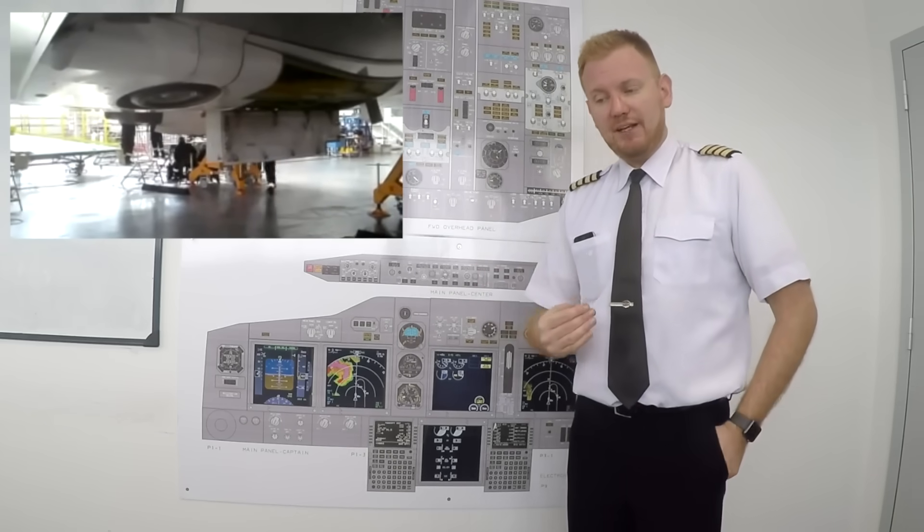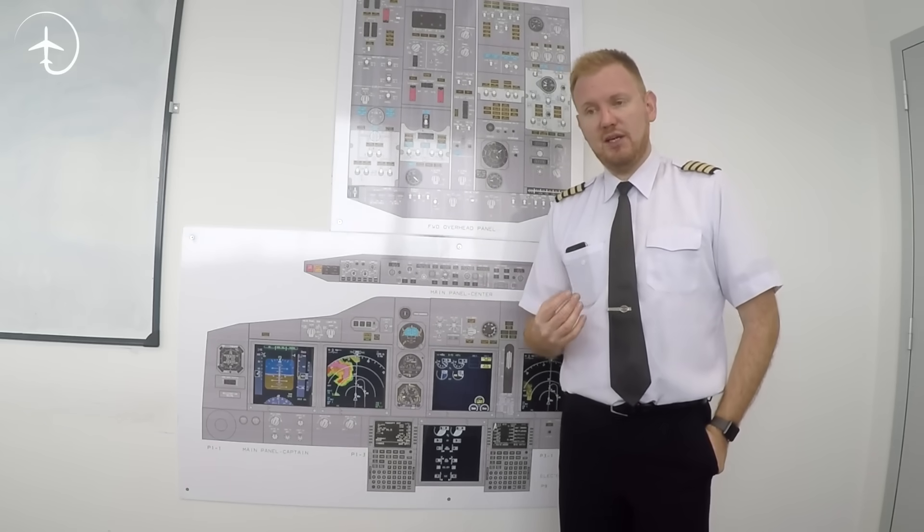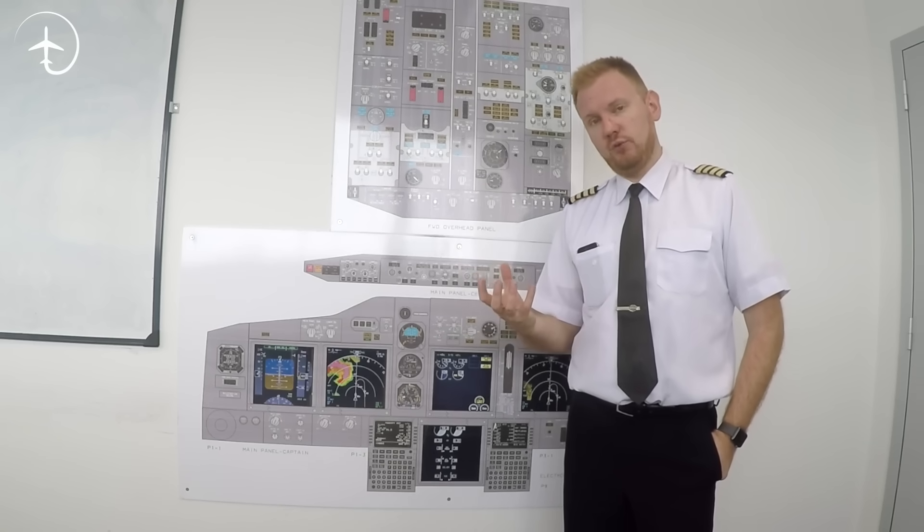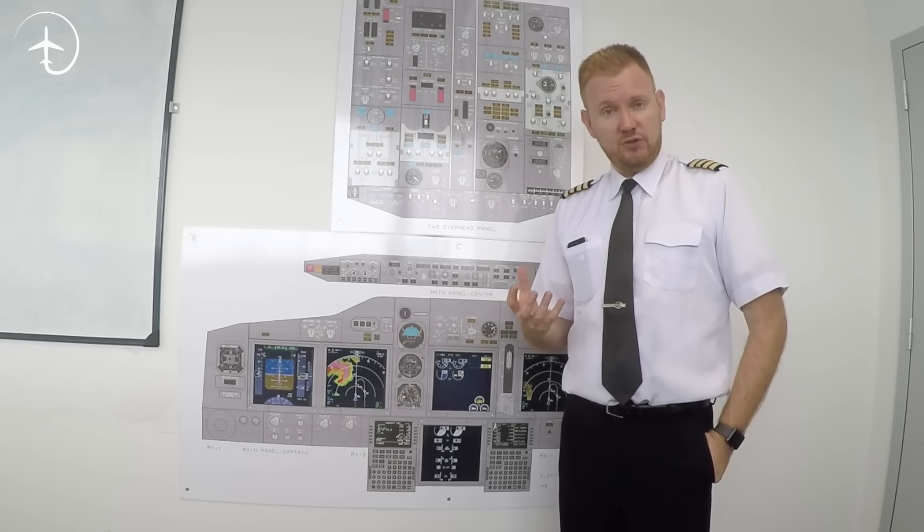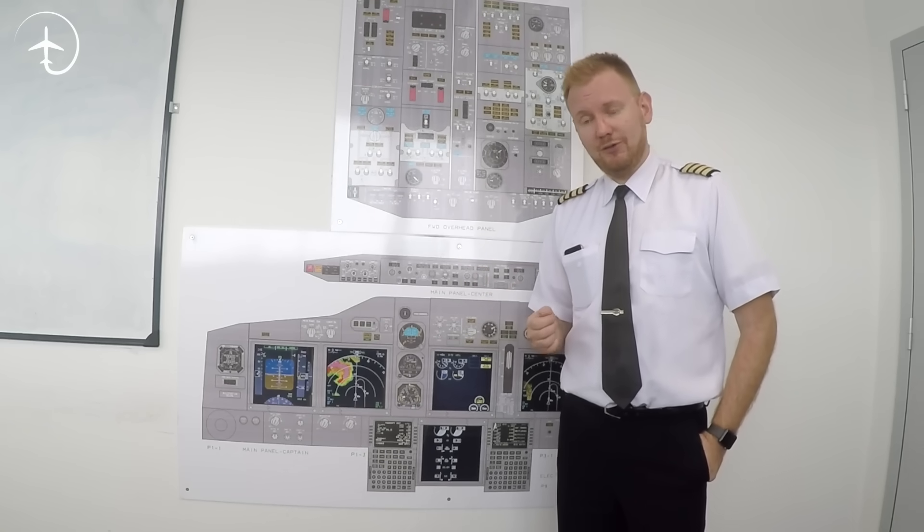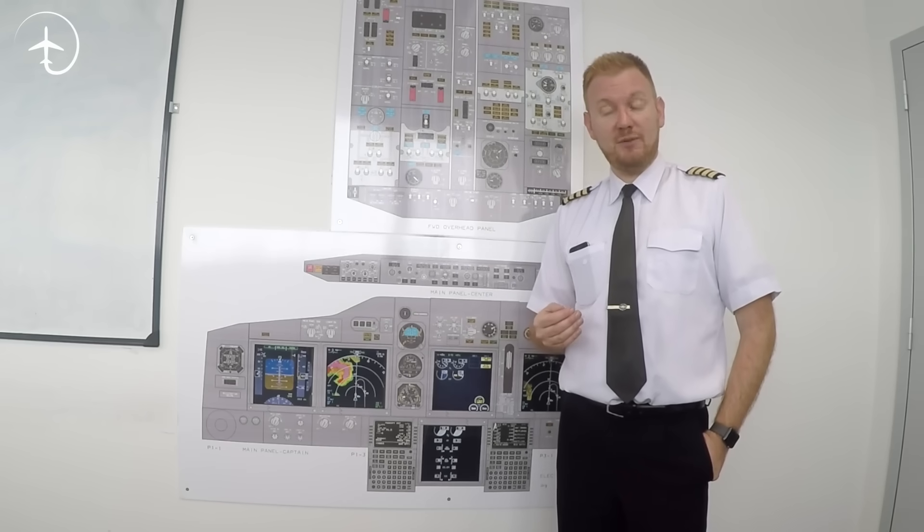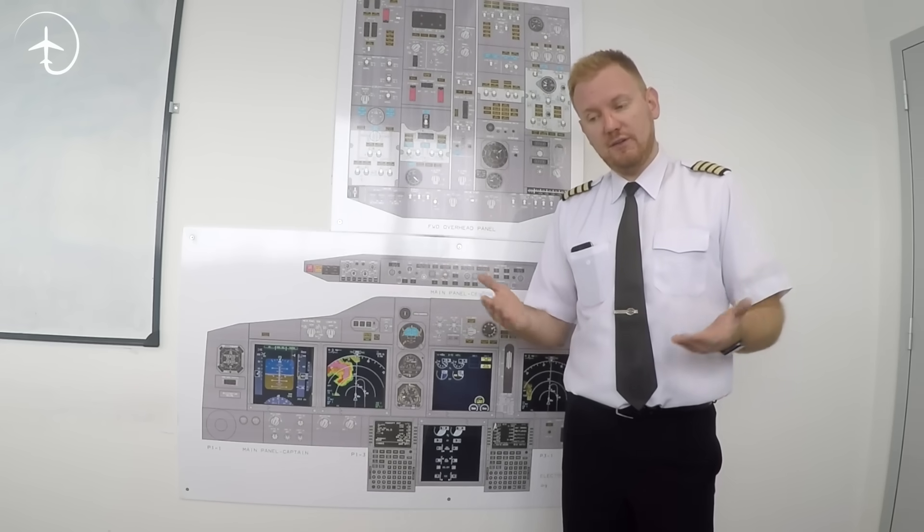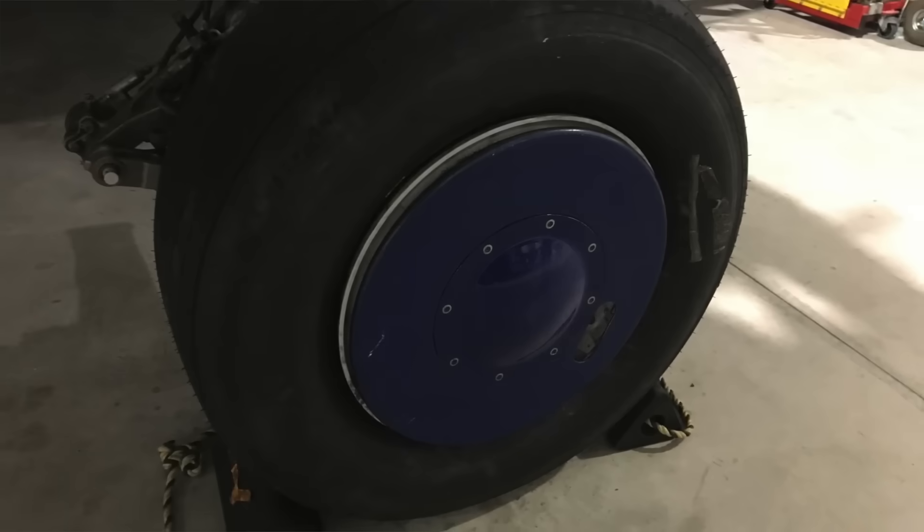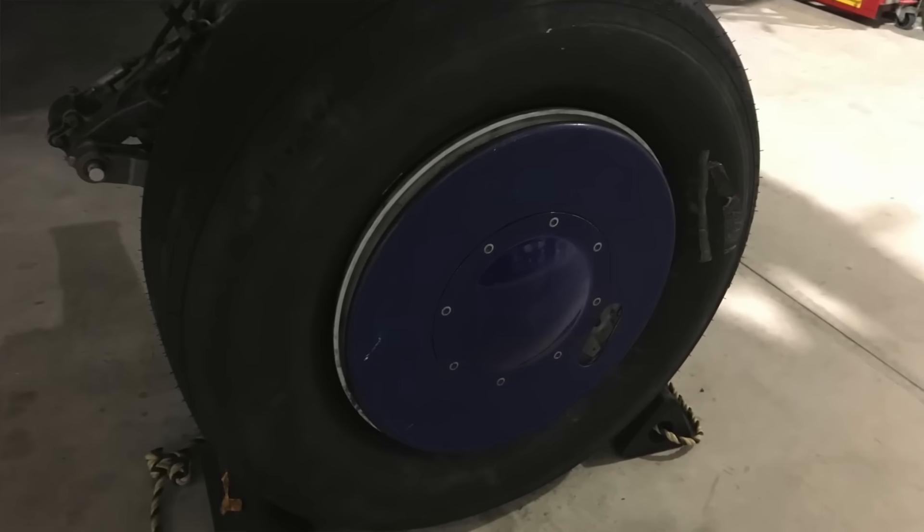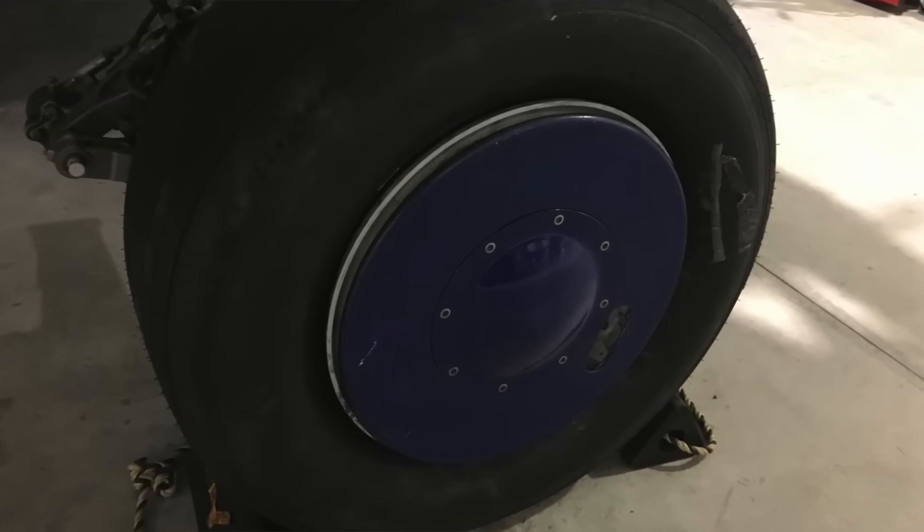Now the next problem they came across was that if you have the tires exposed to the airflow they will potentially cause a lot of drag. Now we need to sort that out in some way and in a typical scrappy fashion the Boeing engineer said well why don't we fit big hubcaps on the outside of the tires.